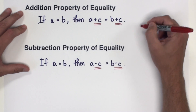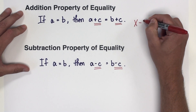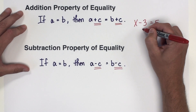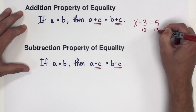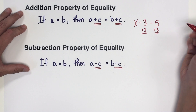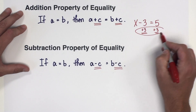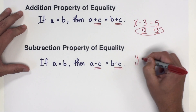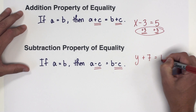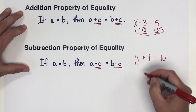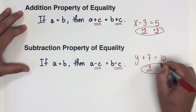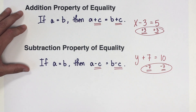For example, if I was solving the equation x minus 3 equals 5, we all know that we are allowed to add 3, but we have to do it to both sides. That's the addition property of equality — we're adding 3 to both sides. Similarly, if I gave you an equation like y plus 7 equals 10 and asked you to solve for y, we would all subtract 7 from both sides, which illustrates the subtraction property of equality.